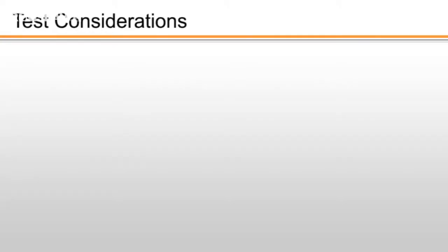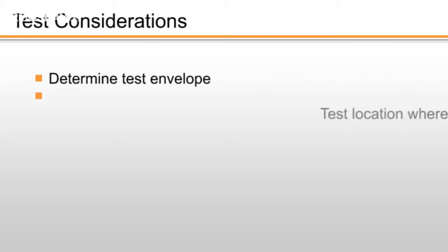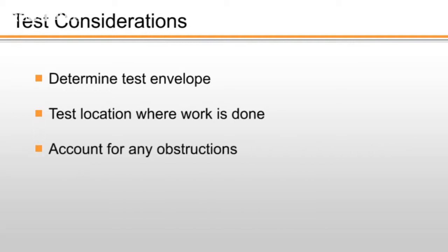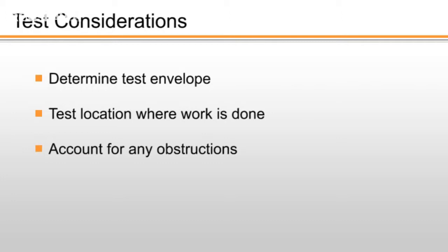Next, give some thought to where in the machine's working envelope the test will be carried out. It makes sense to test a location on the machine where the work is done, particularly if it is a large or elongated machine where it is not possible to encompass the entire working plane in a single test. Be careful to take into account any obstructions such as fixtures and work holding devices that may interfere with the ball bar path.